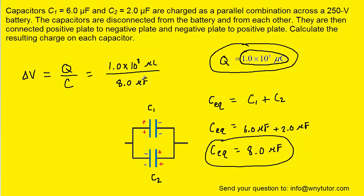Notice that we can leave the unit of charge as microcoulombs so long as the unit of capacitance is microfarads. And so when we divide this, we can see that the potential difference of the new system of capacitors is 125 volts.